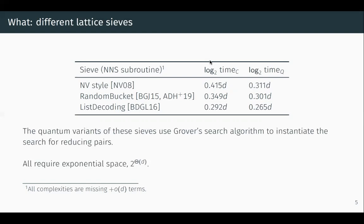Something important to notice is that the quantum versions of all of these lattice sieves consider the nearest neighbour search subroutine, and somewhere within that nearest neighbour search subroutine is a subroutine that searches through a list. The quantum variants replace that classical list search with Grover's search algorithm. All of the lattice sieves that we're going to consider — indeed all lattice sieves — require exponential space, and this exponent grows exponentially with the dimension of the lattice.